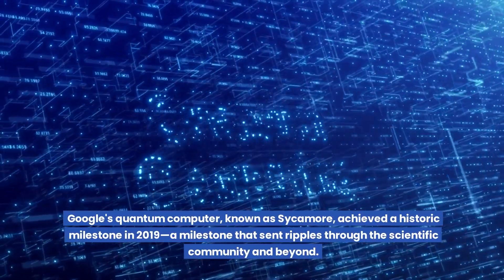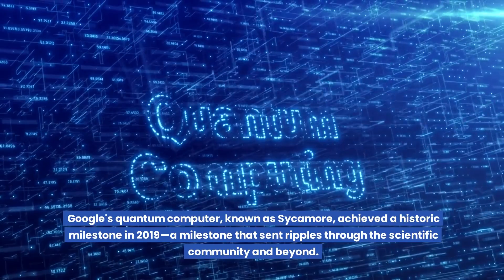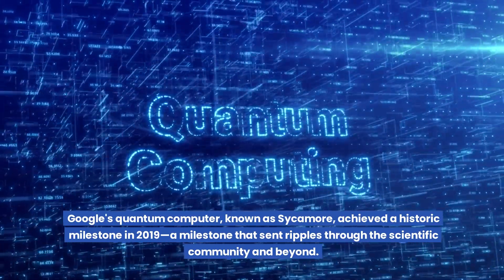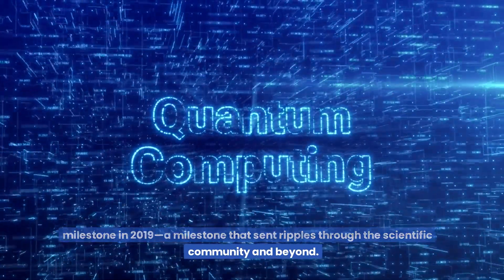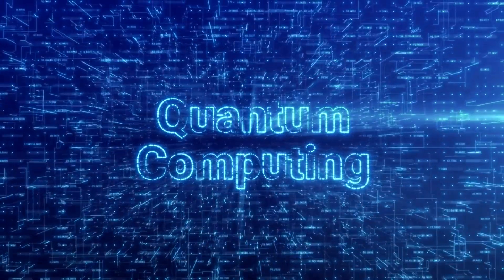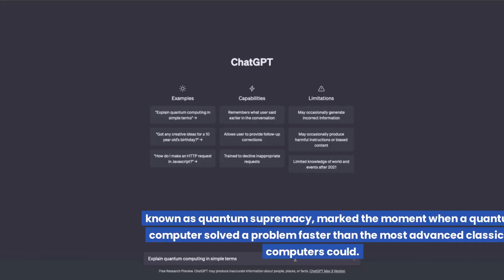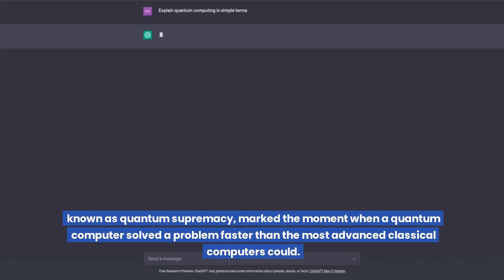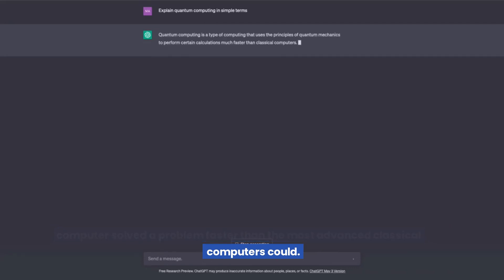Google's quantum computer, known as Sycamore, achieved a historic milestone in 2019, a milestone that sent ripples through the scientific community and beyond. This milestone, known as quantum supremacy, marked the moment when a quantum computer solved a problem faster than the most advanced classical computers could.